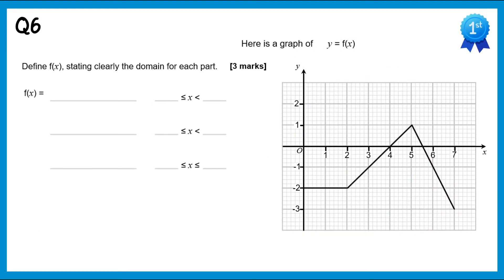In this question we've been given a graph and need to find which function it represents. It's in three parts. The first part takes the value negative 2, so f(x) equals -2. Looking at the x-axis, it starts at 0 and ends at 2, so we fill in the values 0 to 2.